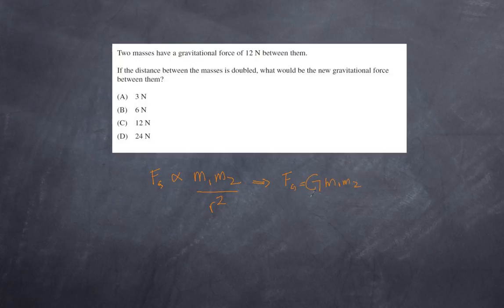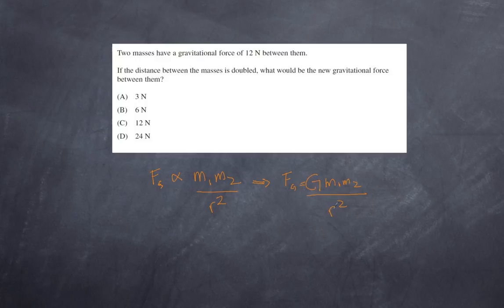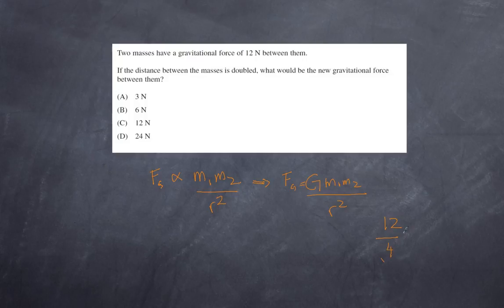You don't actually need to know G for this question. The initial force between two masses is 12 newtons, and the distance is doubled while the masses stay the same. If the distance doubles, the gravitational force decreases because distance is in the denominator, and it's a squared relationship. So instead of halving, it becomes a quarter. 12 divided by 4 gives us 3 newtons, and therefore the answer is A.